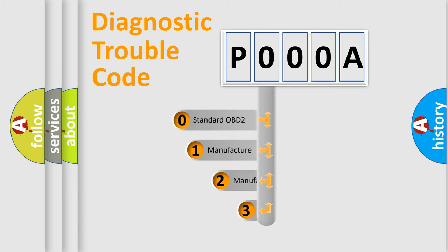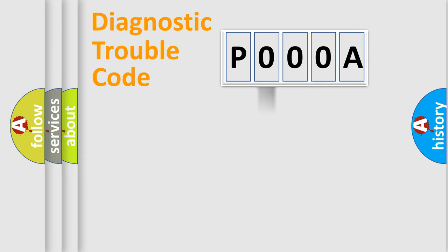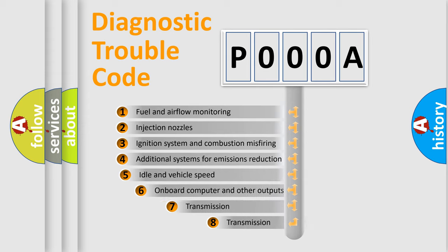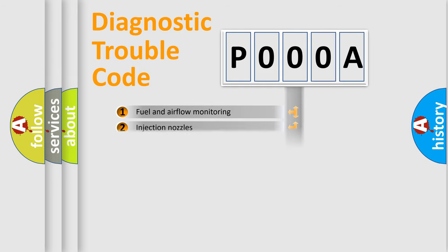If the second character is expressed as zero, it is a standardized error. In the case of numbers 1, 2, 3, it is a manufacturer-specific error. The third character specifies a subset of errors. The distribution shown is valid only for the standardized DTC code.